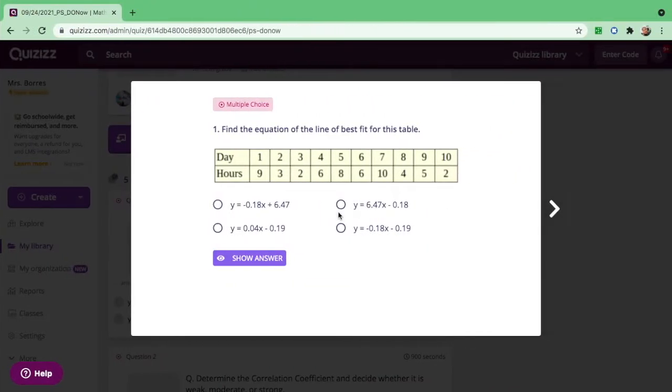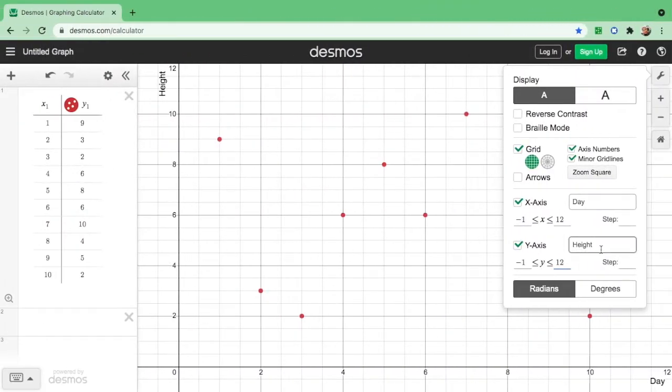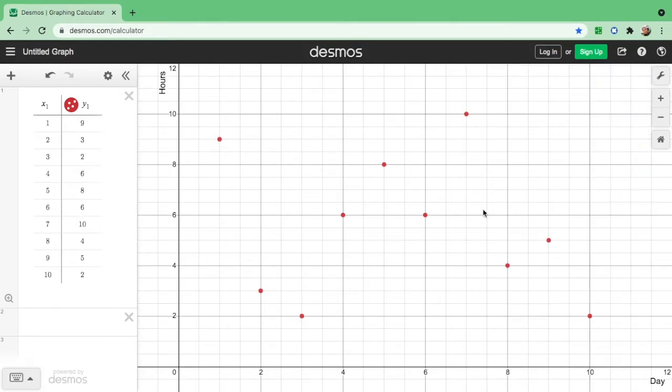And your y is hours, so we can label the y-axis as hours. And then, there you go. So this is a clear picture of the scatter diagram.